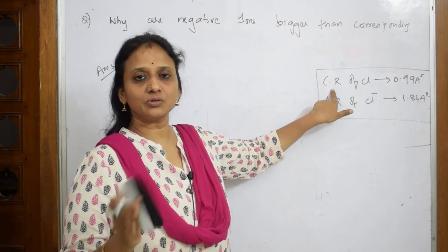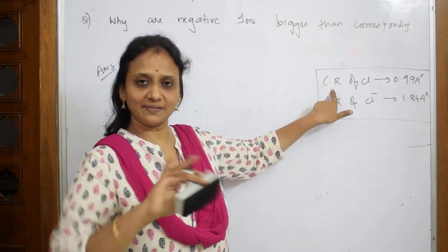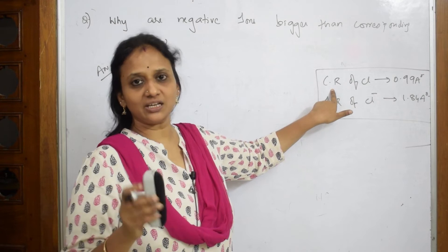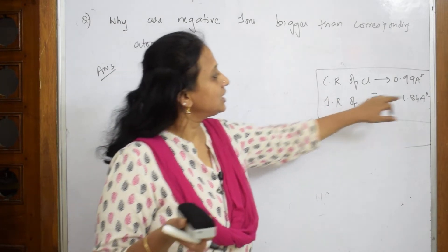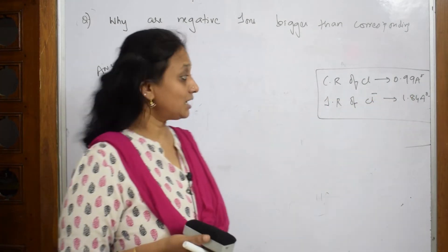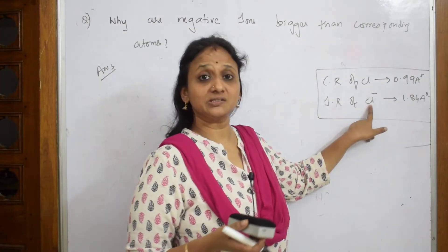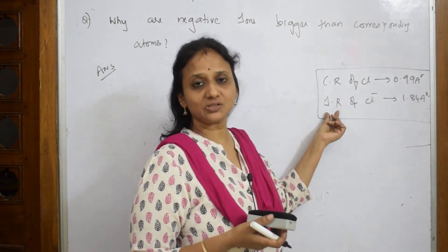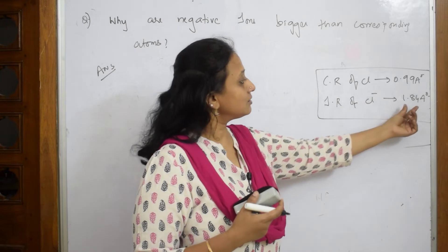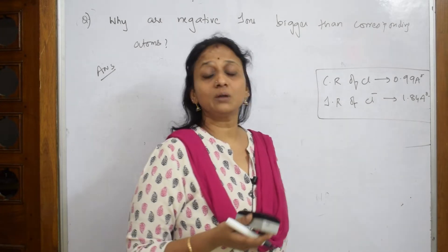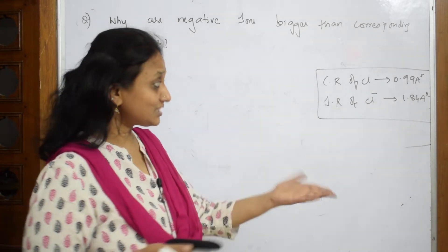Chlorine—Cl and Cl—they form a covalent bonding. That particular radius is called covalent radii. How much is that? It is 0.99 angstroms. But when it comes to Cl minus, now I have to write ionic radii because it has already formed an anion. The radii has increased to 1.84 angstroms. That is what they're asking: why is it increasing?